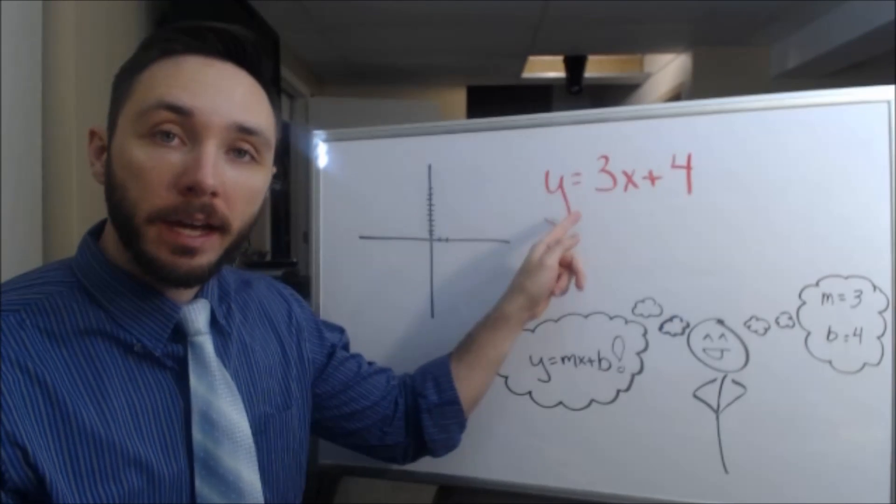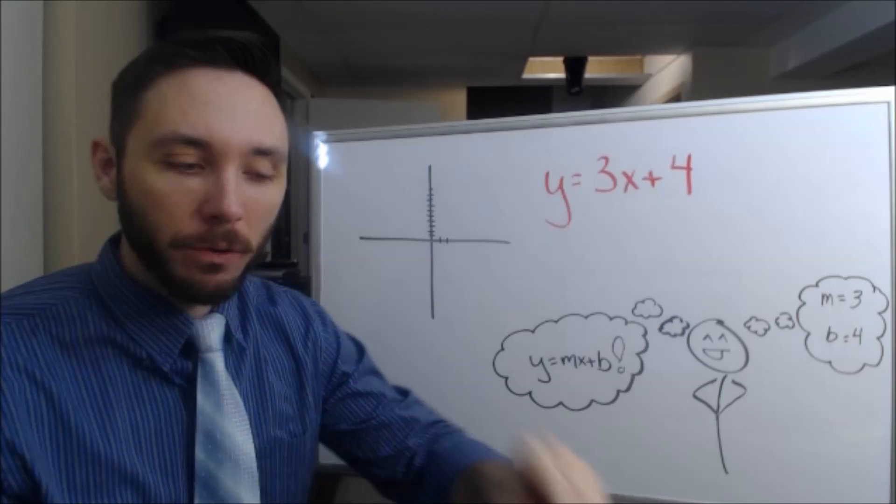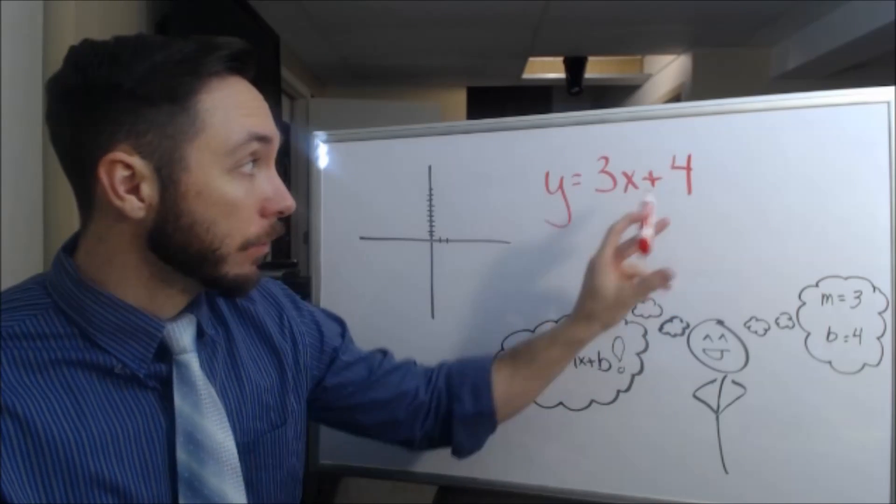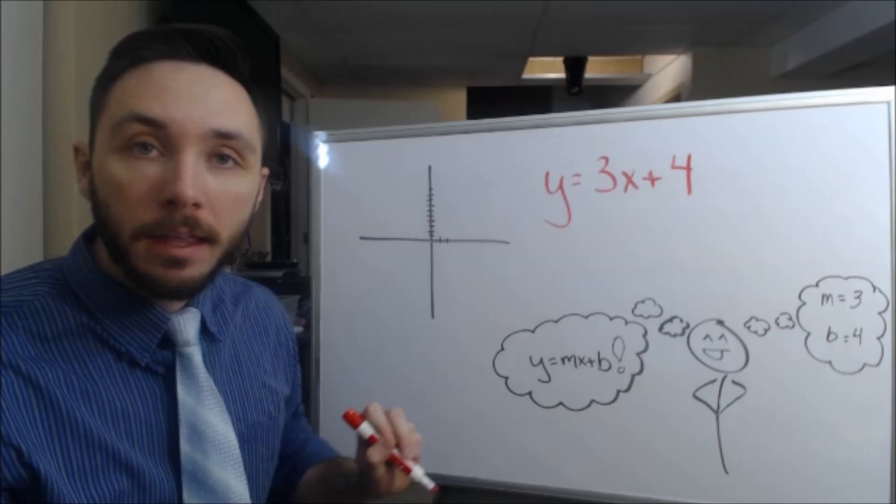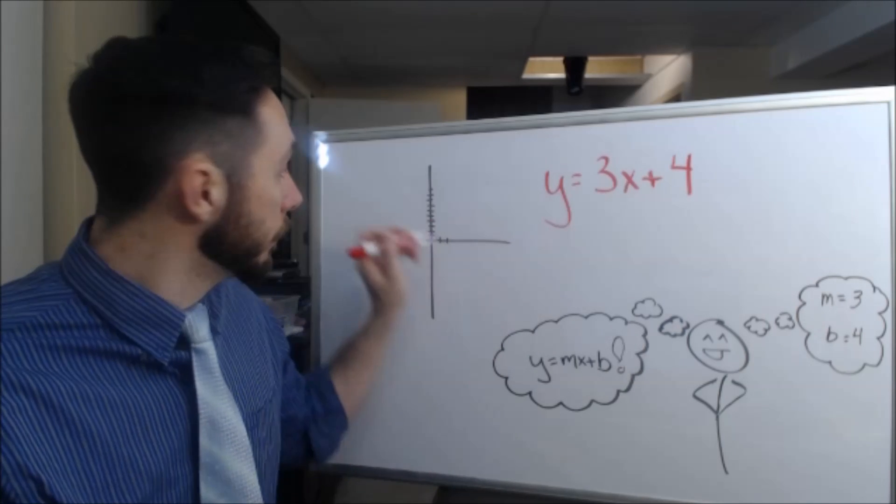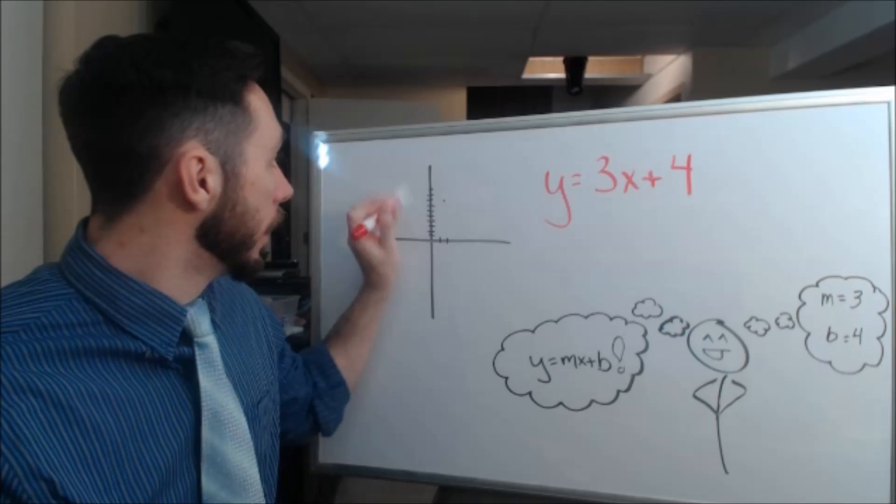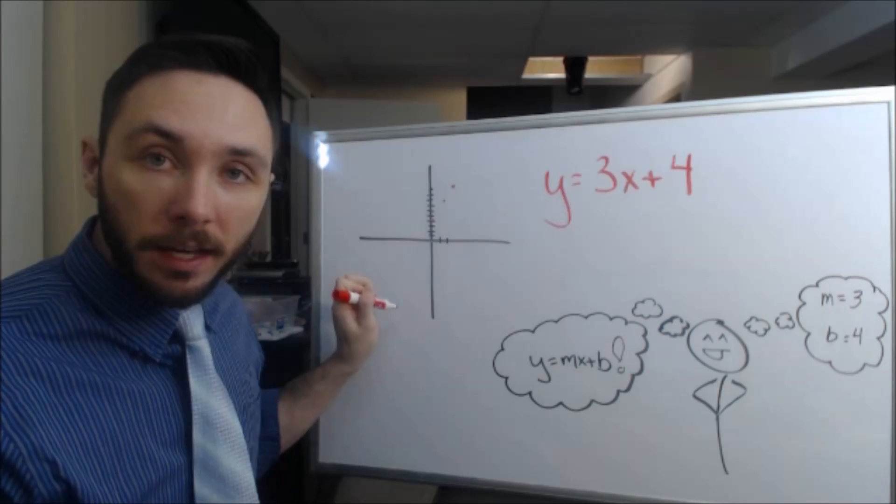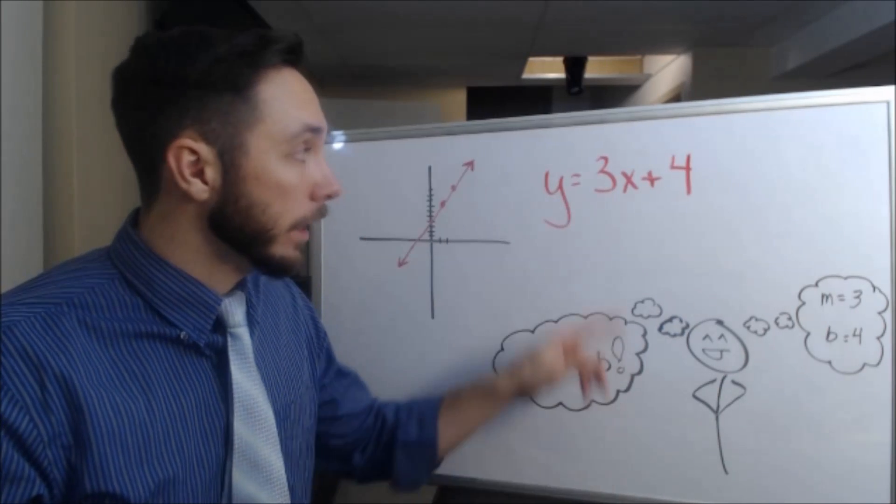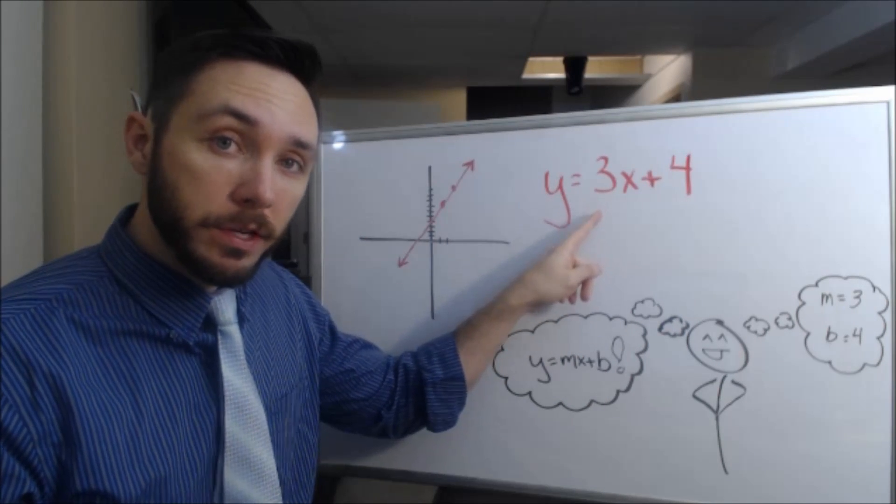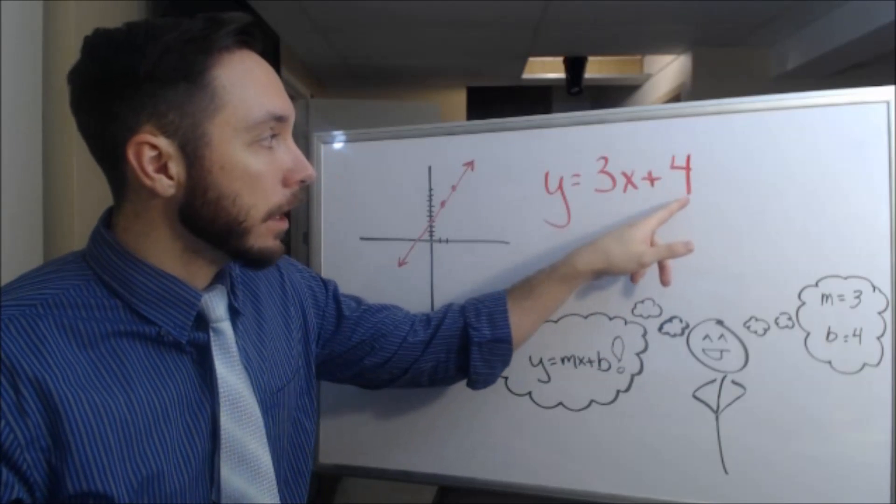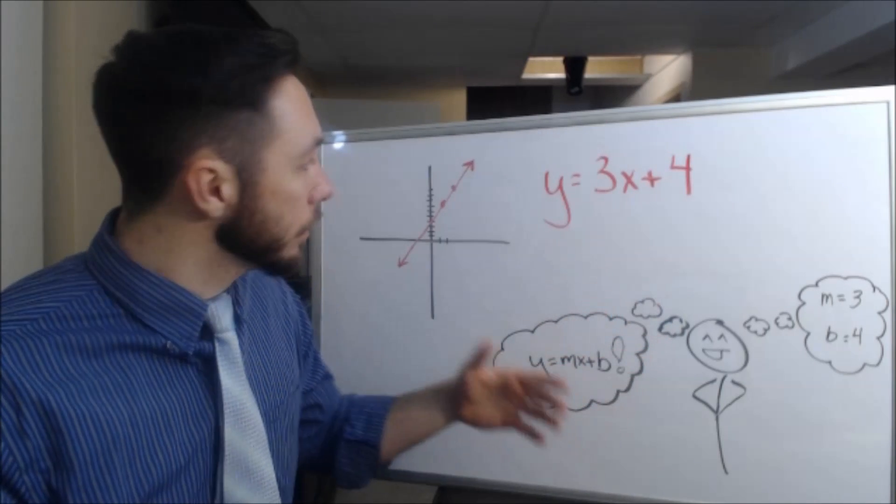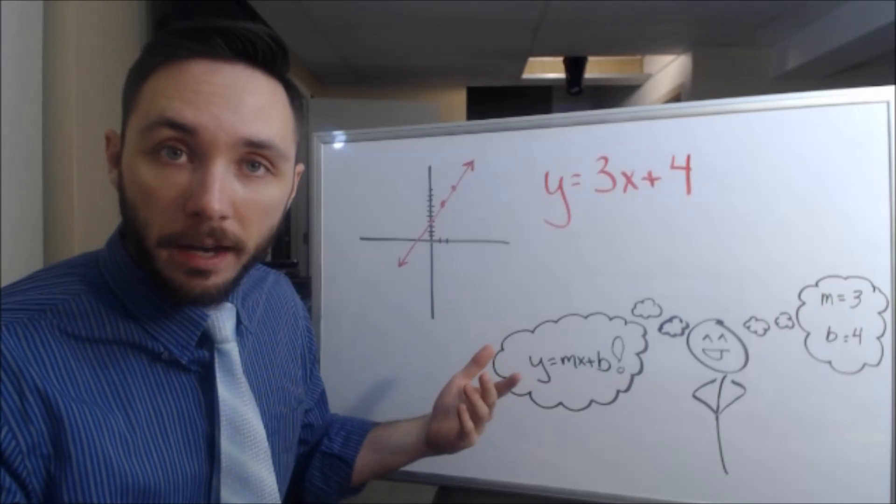So graphing something like y = 3x + 4, really straightforward. Find that y-intercept of 4, poke it, then find that slope of 3, up 3 over 1, up 3 over 1. Graph that line, call it a day. So lines where we have a very clear and obvious coefficient of x, the slope, and constant, the y-intercept, those are usually pretty straightforward, no pun intended, to graph.